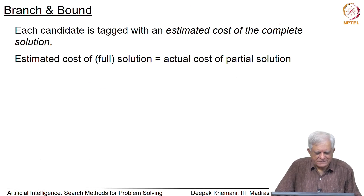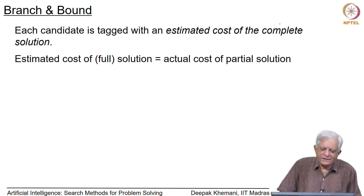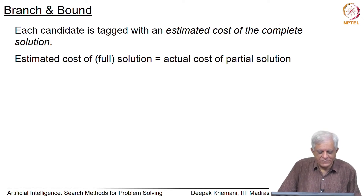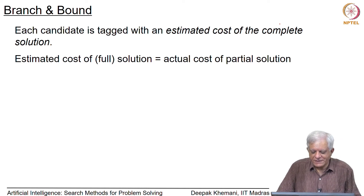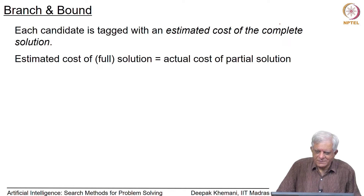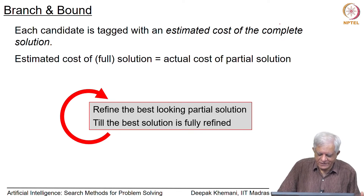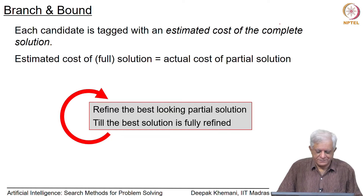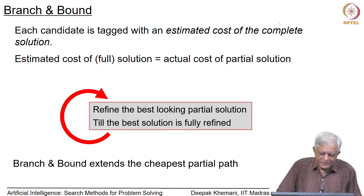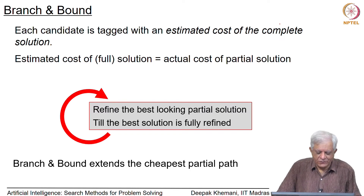Each candidate is tagged with an estimated cost of the complete solution, so at all points we have the complete solution in mind. In branch and bound, the estimated cost of the full solution is simply taken to be the actual cost of the partial solution. It is a gross approximation, but a useful one because it helps find the optimal path. The algorithm refines the best-looking partial solution until the best solution is fully defined, and branch and bound implements this by extending the cheapest partial path found so far.